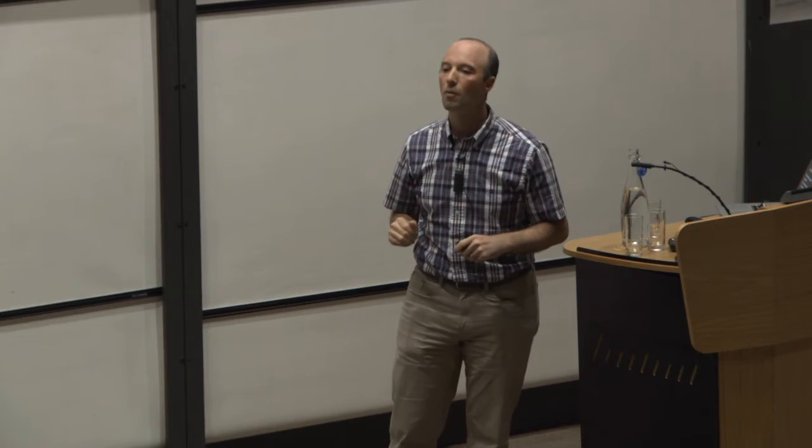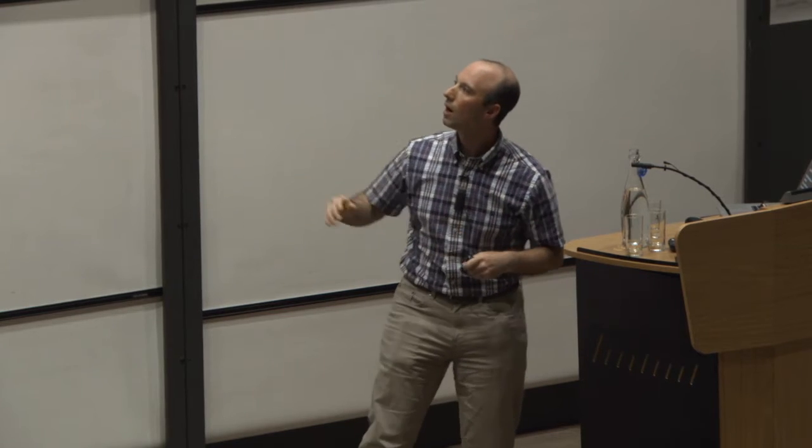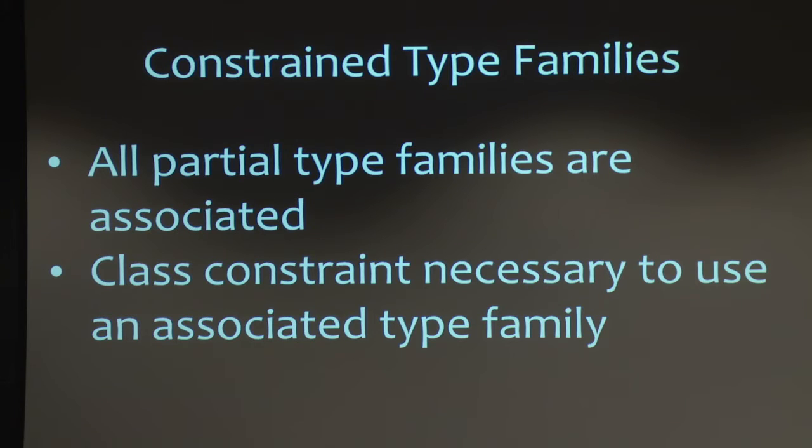So in constrained type families, in this new model of type families that we're proposing, and I should say right now, this is not implemented. Do not look for this in GHC. One of the reasons, though, is that I expect some aspects of this to be somewhat controversial, and so I'm looking forward to the conversation that this starts. So here, all partial type families are associated. So those top-level type families, those are going to be gone now. And if we want to use a type family, we have to have the class constraint available. So right now, we don't need that class constraint, but we're proposing that, in fact, you do want that class constraint.